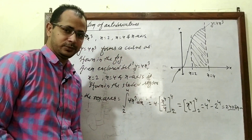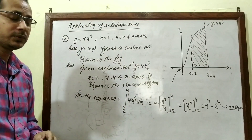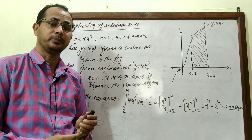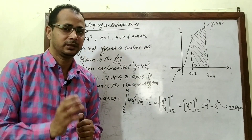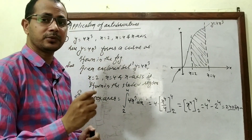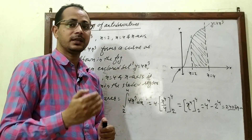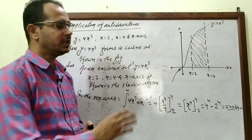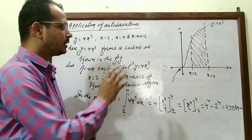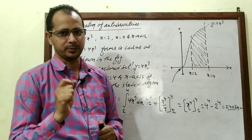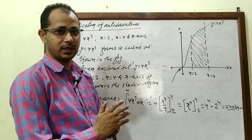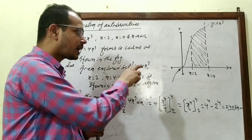Now we have another question: y = 4x³, x = 2, x = 4, x-axis — find the area. We have to draw the curve. y = 4x³ is a cubic function. To draw the curve, we need to find certain key points and understand its shape.